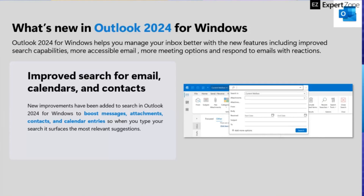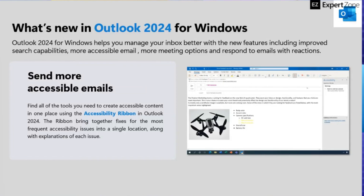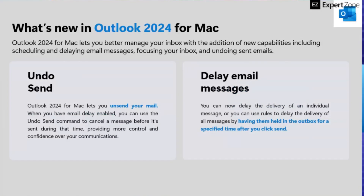For Outlook, there is an improved search for emails, calendars, and even contacts — the search is now more in-depth. You can also send accessible emails, which is part of the accessibility tools available in Office 2024. Scheduled email sending is now available on Mac, and same with Focus Your Inbox — now available on Mac as well. Similar to messaging apps with an unsend feature, you can now undo a sent email in Outlook. If you made a mistake in your email, you can retrieve and unsend it. This undo send update is specifically for Mac, as it was already available on Windows. Delay email message is also available.